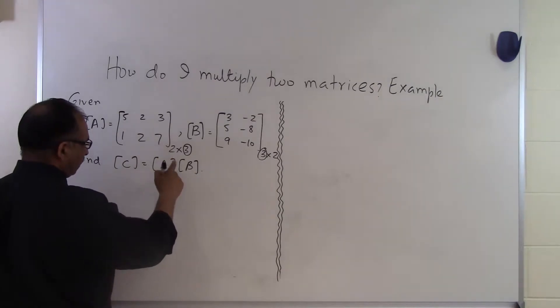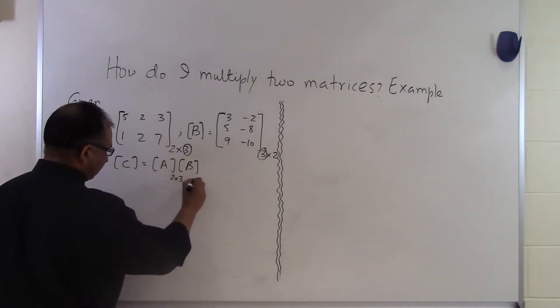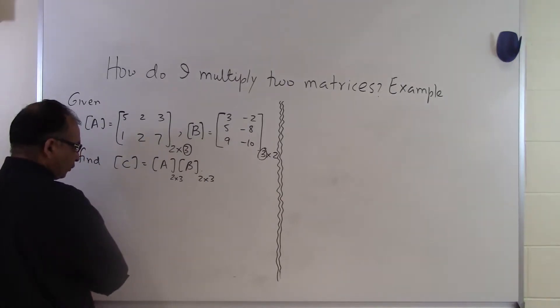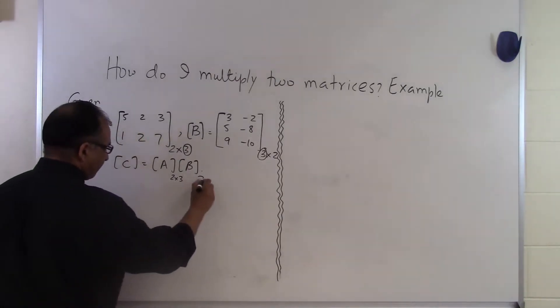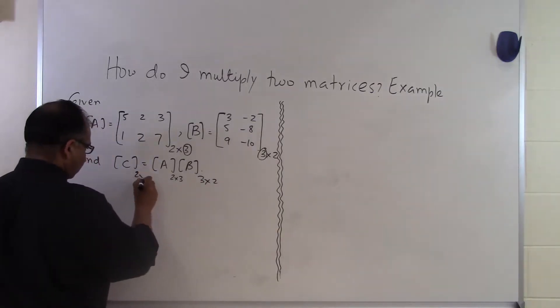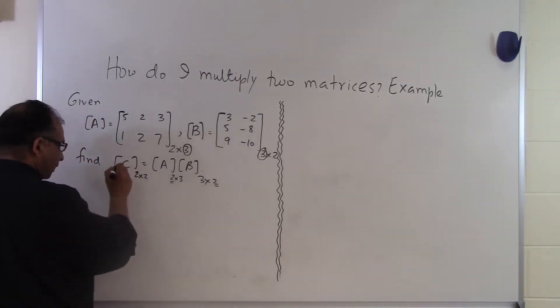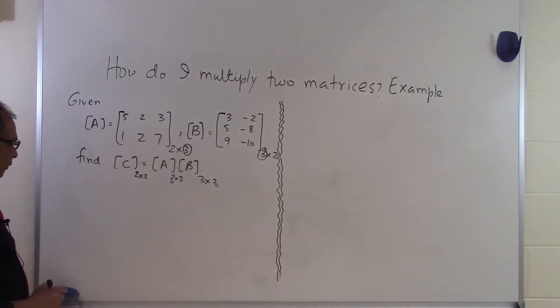Now the resulting matrix, so this is a 2 by 3 matrix here, and a 3 by 2 matrix here, so the resulting matrix will be a 2 by 2 matrix because it will depend on the number of rows which you have here and the number of columns which you have here and that's the resulting size of the C matrix right there.